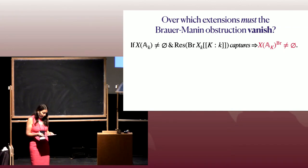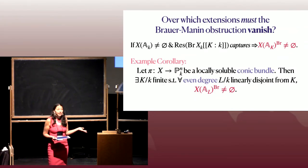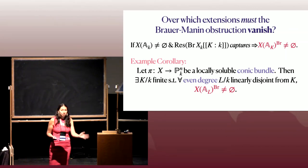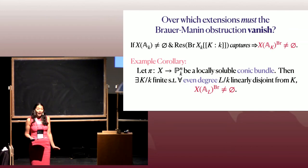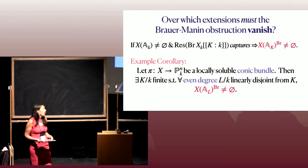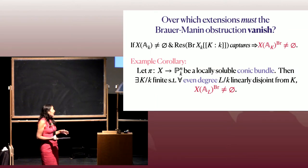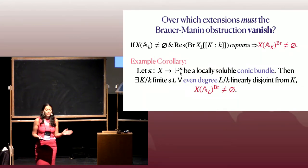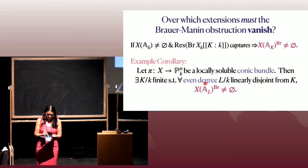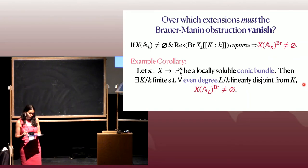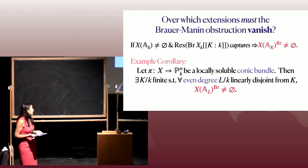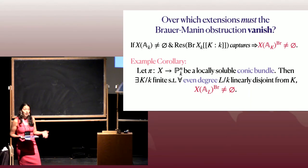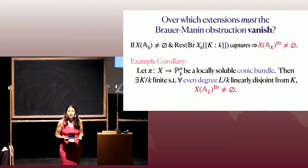Here's an example corollary we get from assembling basic things already known. If you have a conic bundle over projective space where the fibers are conics and the generic fiber is smooth, and you assume it has adelic points, then — avoiding some fixed finite extension — for all even-degree extensions that are linearly disjoint from this fixed one, you immediately get a non-empty Brauer set. For conic bundles like this, it's conjectured that the Brauer-Manin obstruction is the only obstruction to rational points, with conditional results in this direction.